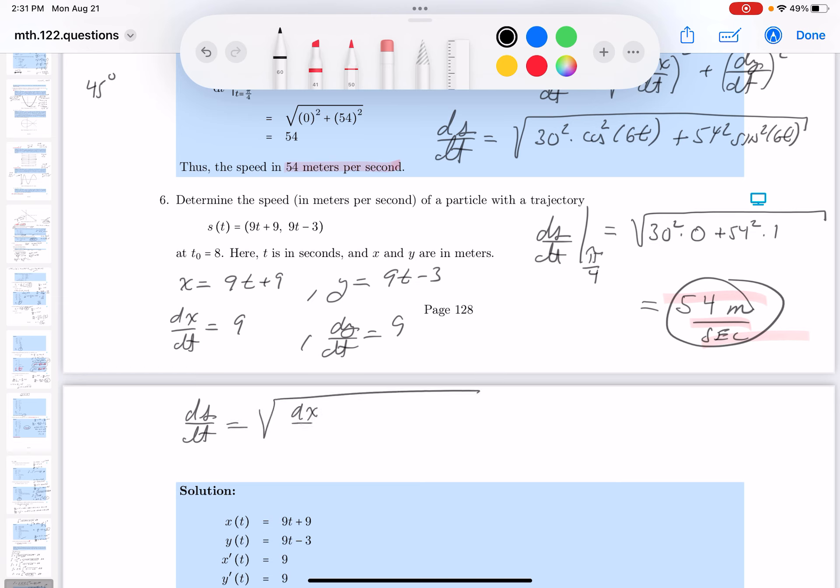So it's going to be dx dt squared plus dy dt squared. It's relatively simple to do. And what do you get there? 9 squared plus 9 squared, which is 2 times 9 squared. And what's that going to be? 9 root 2.